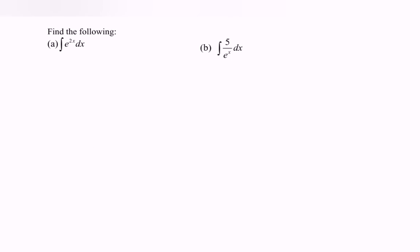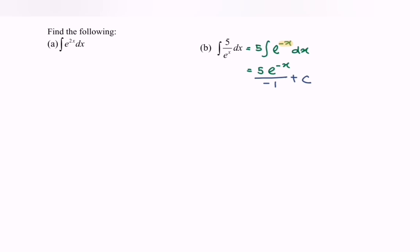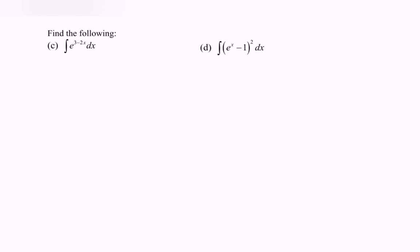Next, kindly focus on part b. We will have 5 times the integral of e to the power of negative x with respect to x. We will have 5 e to the power of negative x — focus on the power, differentiate the situation — and we will have negative 1 plus c. So rewrite the situation and we will have negative 5 over e to the power of x, plus c.